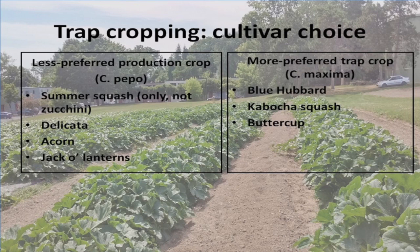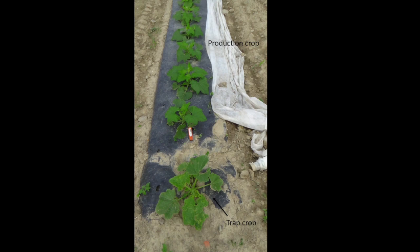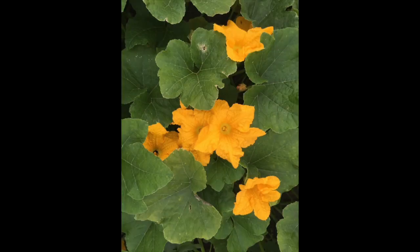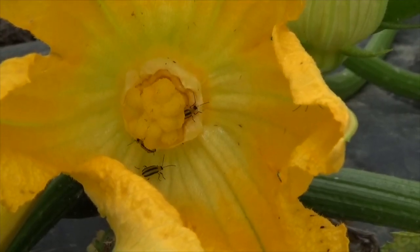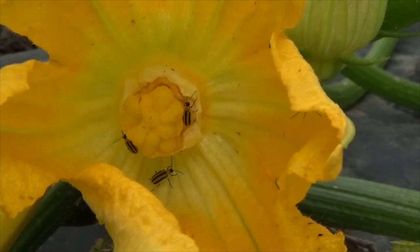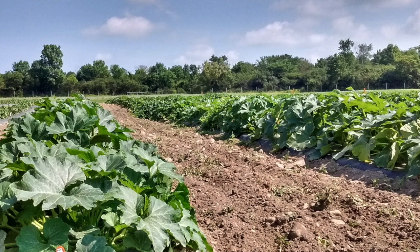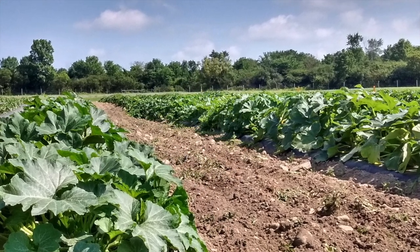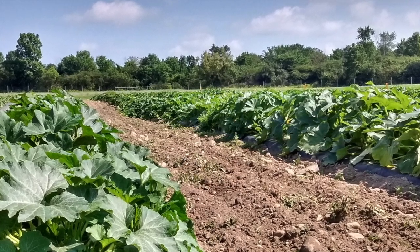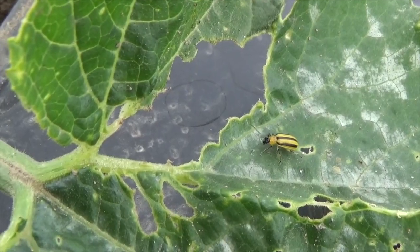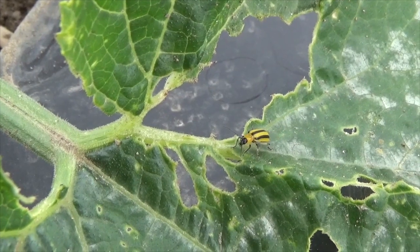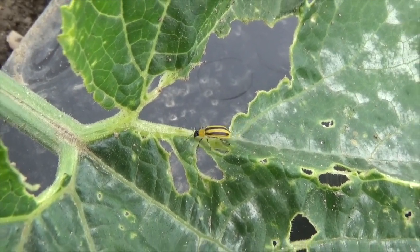Cucurbita maxima, or Hubbard-type varieties, are highly preferred by striped cucumber beetles and can therefore be a good trap crop alongside less preferred Cucurbita pepo crops. Note that this won't be effective for a Cucurbita pepo crop that is also highly preferred, like golden zucchini. The beetles will be attracted to the trap crop plants, especially the flowers, and will preferentially spend time on them. One major consideration is whether and how to kill the beetles on the trap crop to reduce the population in the field. This can be done through targeted pesticide application on conventional farms, which allows the trap crop to reach maturity and provide an additional product for market. The beetles and plants can also be destroyed with a flame weeder, though this may eliminate the possibility of harvesting a crop from the trap plants.